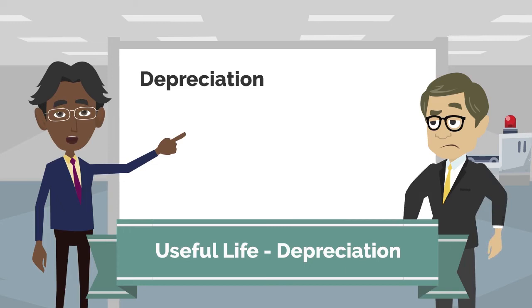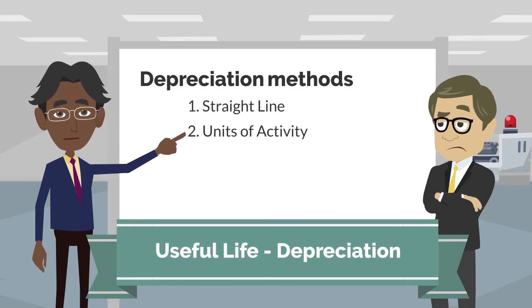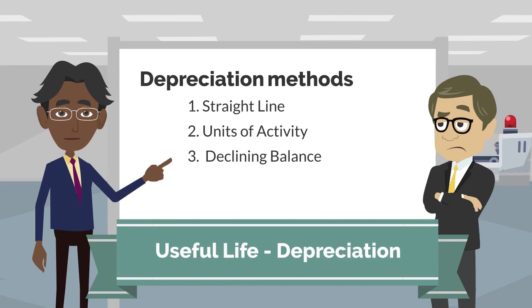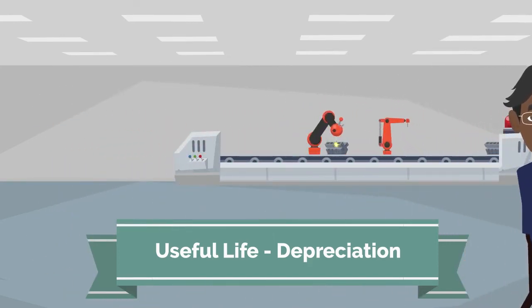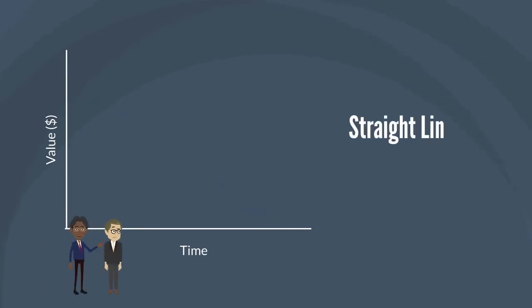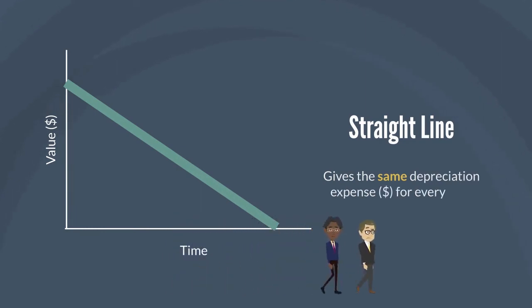There are three main depreciation methods. Straight line, units of activity, and declining balance. Companies must follow one depreciation method over the entire useful life of an asset. Let's take a closer look at each method. The first method is the straight line method. This method of depreciation is the simplest. It gives the same depreciation expense in dollars for every year.